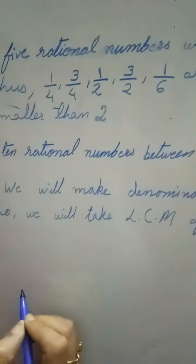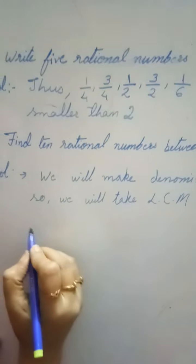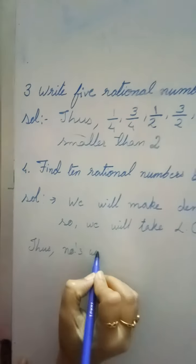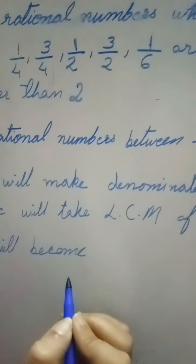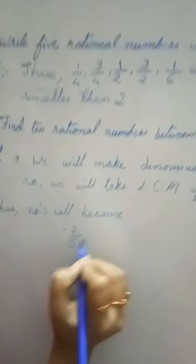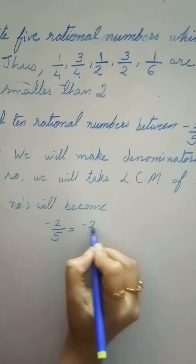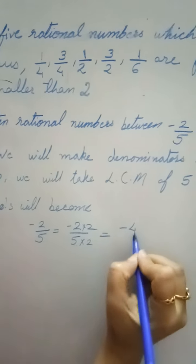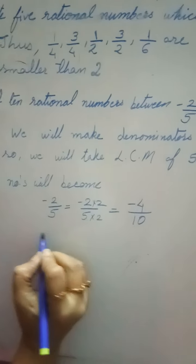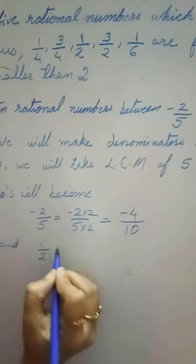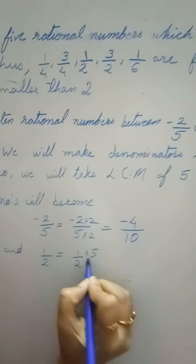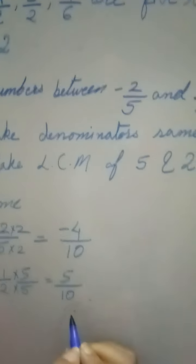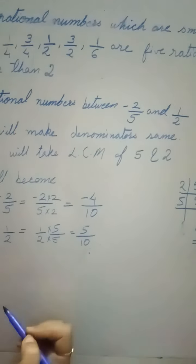So when we get the LCM as 10, the numbers will change. -2/5 will become equal to -4/10, because we multiply both numerator and denominator by 2. And 1/2 will become 5/10 by multiplying both sides by 5. So the numbers become -4/10 and 5/10.